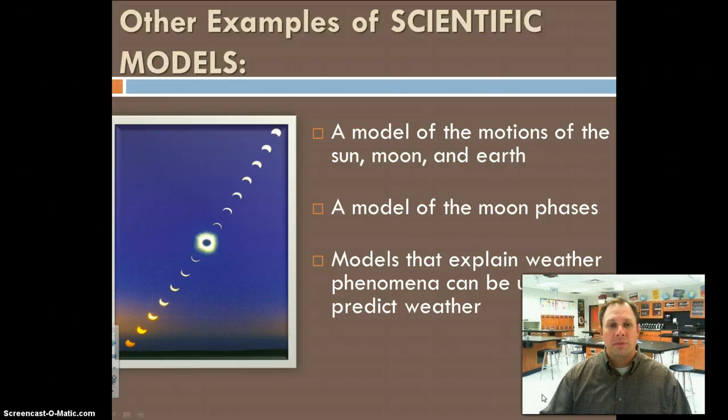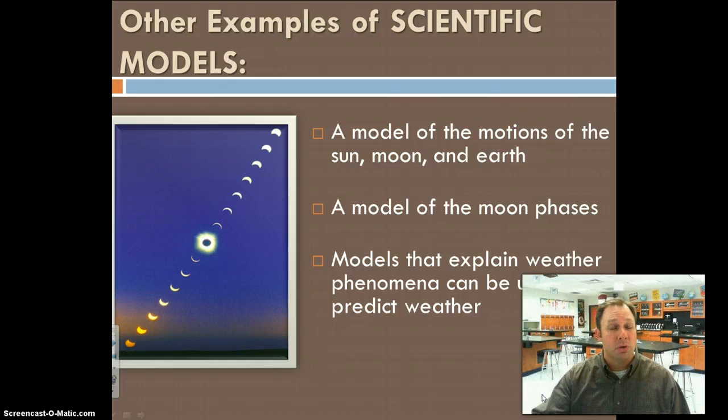So some examples of scientific models would include maybe a model of the sun, moon, and earth, and that relationship. Maybe you built that model in the past out of styrofoam balls, making the sun in relationship to the earth, and so forth. It helps us get a better understanding of our solar system, and the patterns and the movements within our solar system.